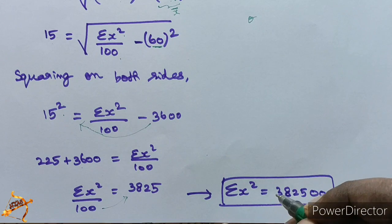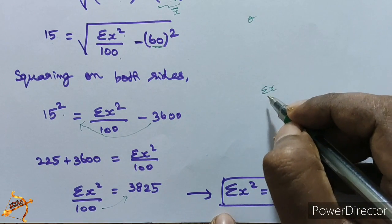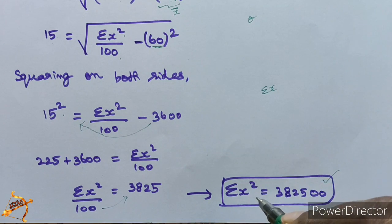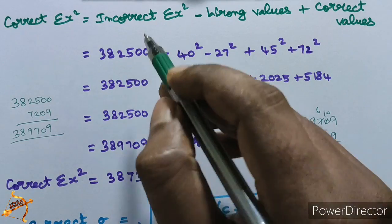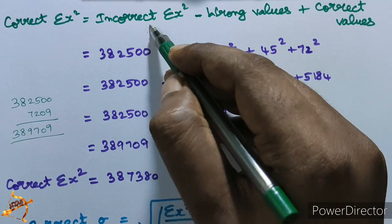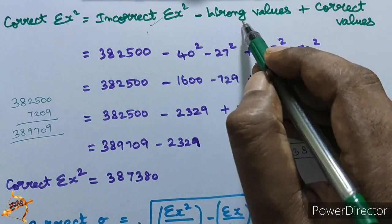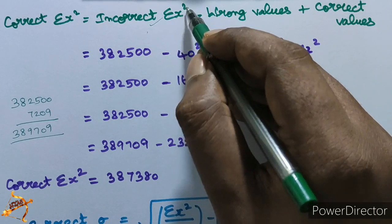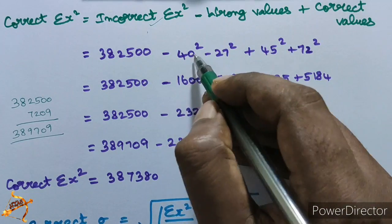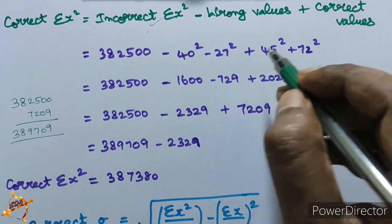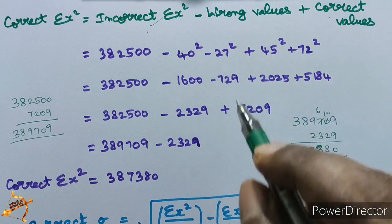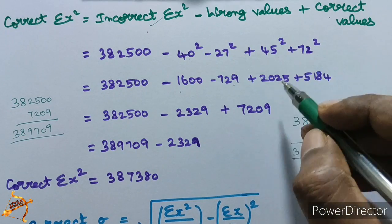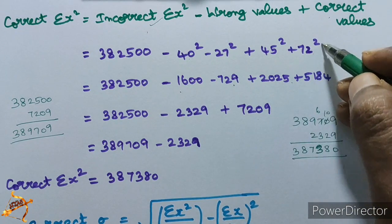Now we find the correct summation x². From incorrect Σx², we remove the wrong values and add the correct ones. Correct Σx² = incorrect Σx² − 40² − 27² + 45² + 72². That is: 382500 − 1600 − 729 + 2025 + 5184 = 387380.